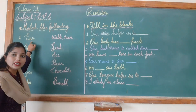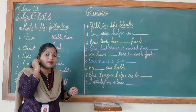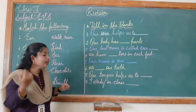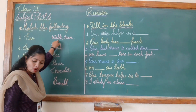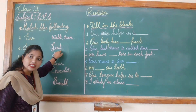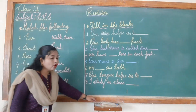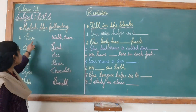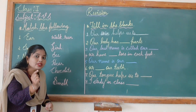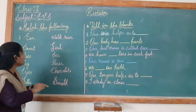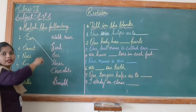First is what, children — ear. Ear means what? Our ear helps us to hear. So here, the options are: walk or run, girl, see, and hear. I will match this ear to 'hear', because our ear helps us to hear.